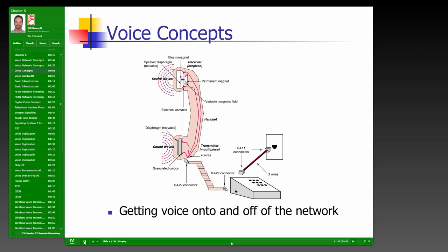In this graphic, the signal goes through copper wires connected to the handset. Up at the earpiece, the electromagnetic signals are carried to an electromagnet that vibrates based on the electromagnetic current. A speaker diaphragm vibrates and converts the electromagnetic signals into sound waves that we hear in our ears.